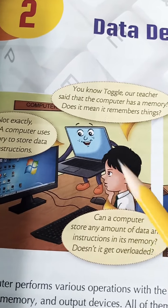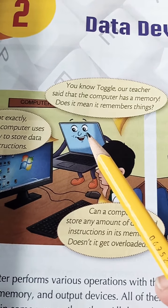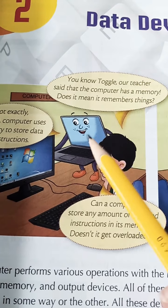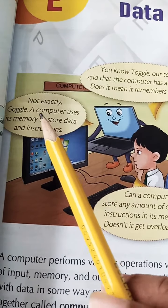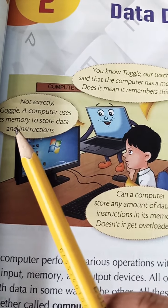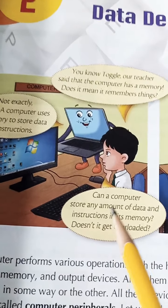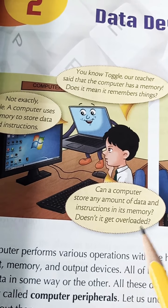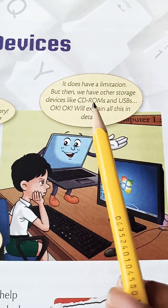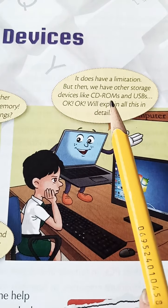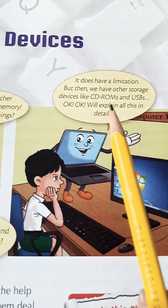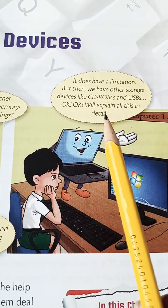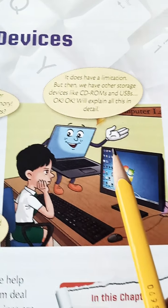He is saying, you know Toggle, our teacher said that the computer has a memory. Does it mean it remembering things? Not exactly Goggle. A computer uses its memory to store data and instructions. Can a computer store any amount of data and instructions in its memory? Doesn't it get overloaded? It does have a limitation. But then we have other storage devices like CD-ROMs and USBs. We'll explain all this in detail.